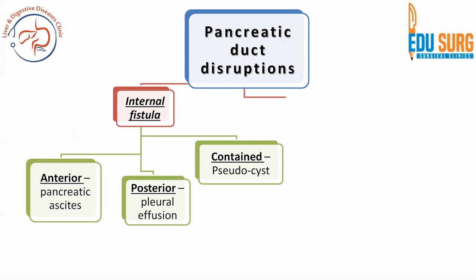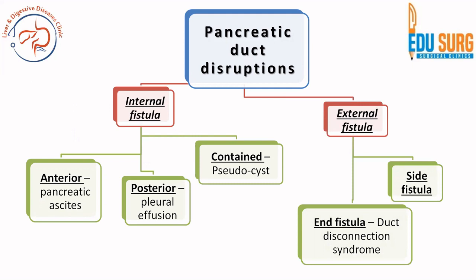Pancreatic duct disruptions encompass all pancreatic fistulas. The types can be internal fistula or external fistula. External fistula can be a side fistula or an end fistula where the complete duct is transected, known as duct disconnection syndrome. In internal fistula, if it is anterior it can lead to pancreatic ascites. If it is posterior, it can go across the diaphragm and lead to pleural effusion, and if it is contained it can result in formation of a pseudocyst.